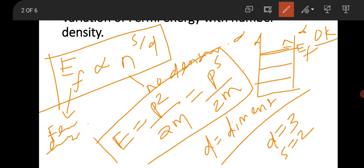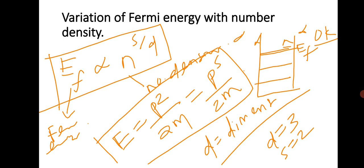This is the variation of Fermi energy with number density — an important formula to note. You should know how to use it in different situations because questions come in different forms. For example, if Ef varies as n³ and two dimensions are mentioned, you may be asked the nature of the dispersion relation — whether it is quadratic or linear.